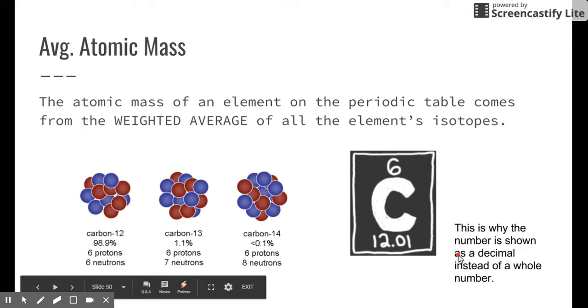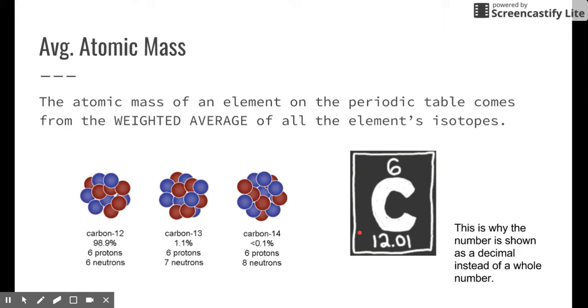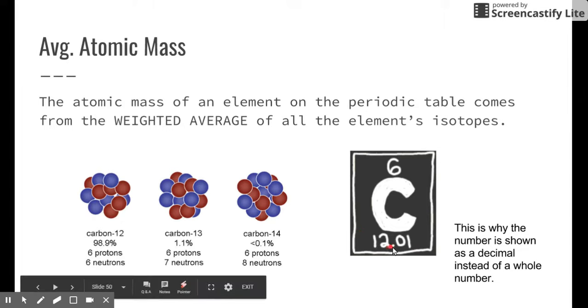Those numbers are important because they represent the average atomic mass. When we look on the periodic table, for example, right here with carbon, we see that carbon is represented by 12.01. Why didn't they just write carbon with a mass of 12? If that represents the protons and the neutrons, why isn't it a whole number? Because protons and neutrons come in whole numbers. Well, the reason for that is because this number does not represent one of the carbons. It represents all of the carbon isotopes, namely carbon-12, carbon-13, and carbon-14.